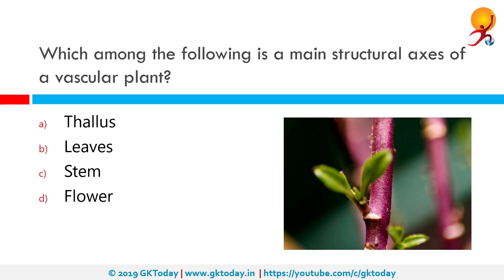Which among the following is the main structural axis of a vascular plant? The correct answer is stem. A stem is one of the two main structural axes of a vascular plant, the other one being the root. The stem is normally divided into nodes and internodes. The nodes hold one or more leaves as well as buds which can grow into branches.